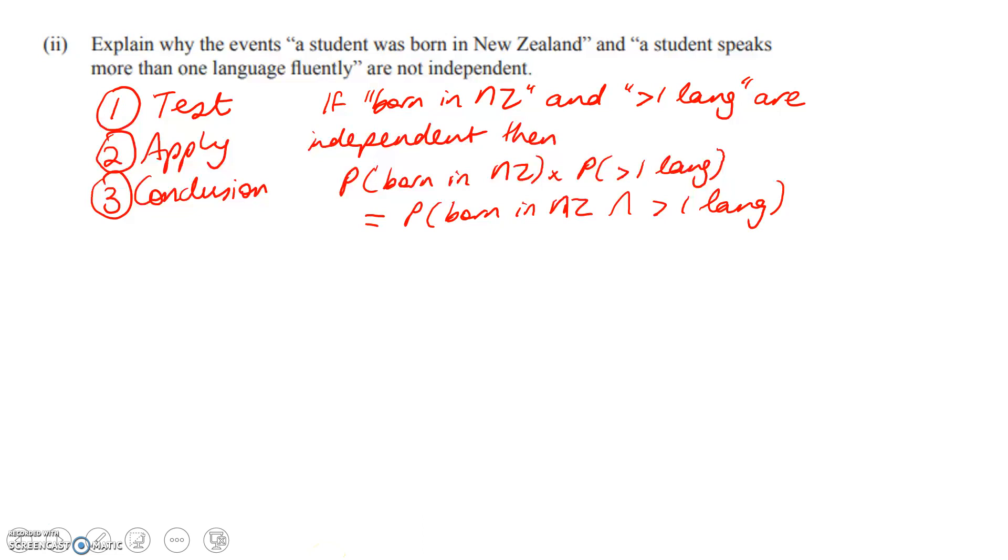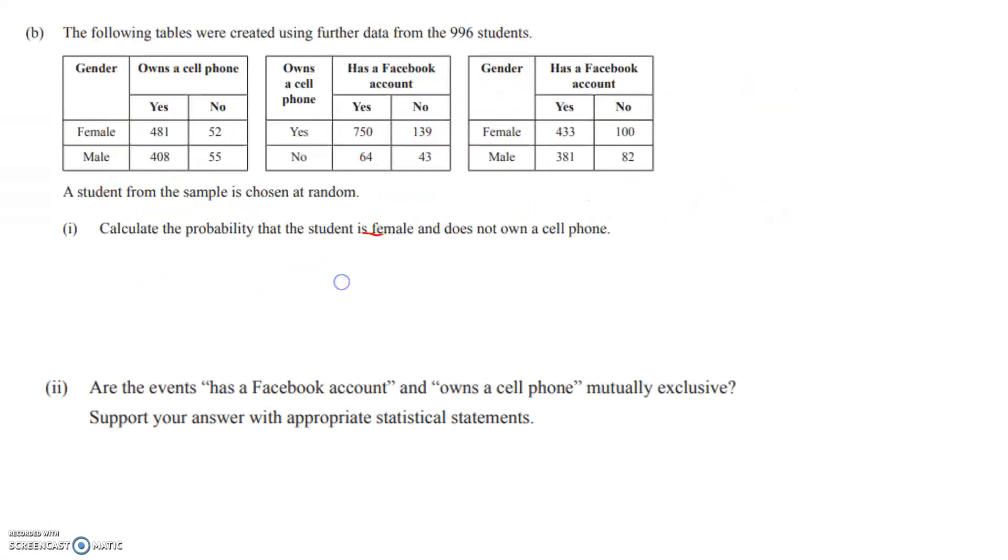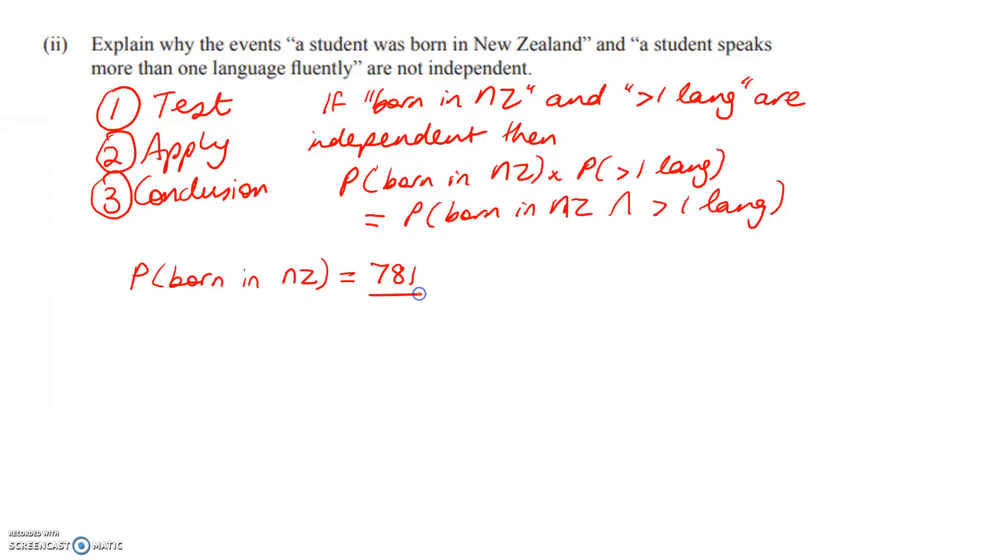Step two is to plug in my numbers and work them out. The probability of being born in NZ is 781 over 996. The probability of speaking more than one language is equal to 428 over 996. We might as well do them as decimals. So 0.7841 and this one here is 0.4297. Right, so that's the two separate probabilities.